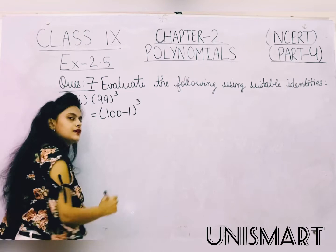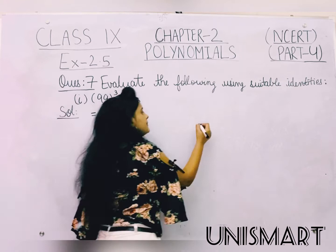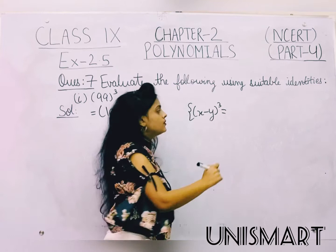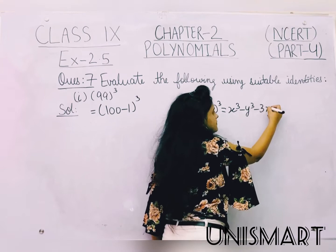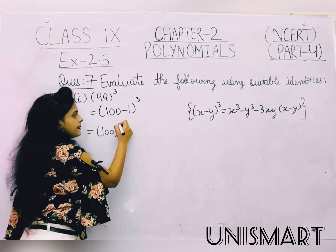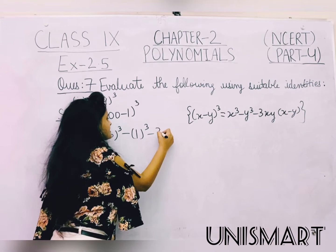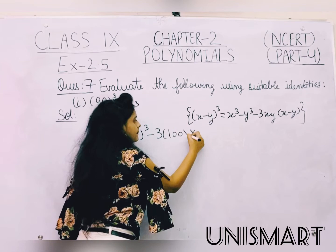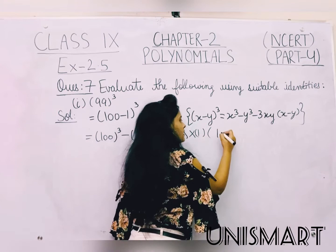Now we have to put our identity A minus B whole cube. The identity is: (X minus Y) whole cube is equal to X cube minus Y cube minus 3XY(X minus Y). Ab yeh hum apply karte hain. So X cube is 100 cube, minus Y cube is 1 cube, minus 3XY where X is 100 and Y is 1, and in the bracket X minus Y means 100 minus 1.